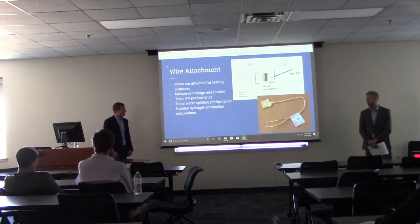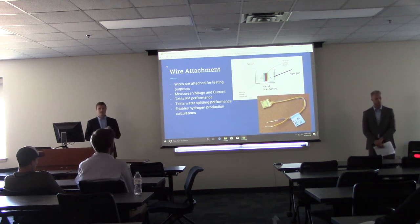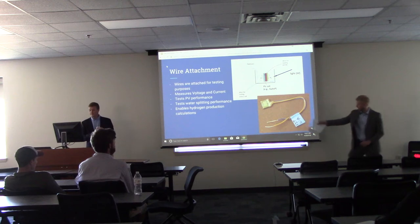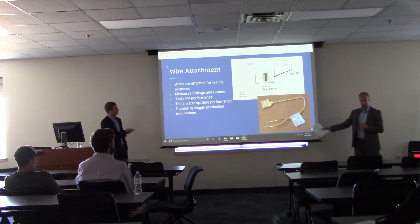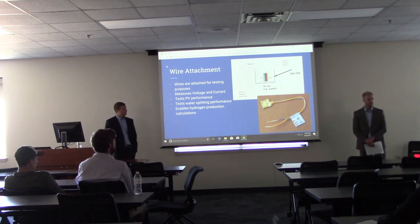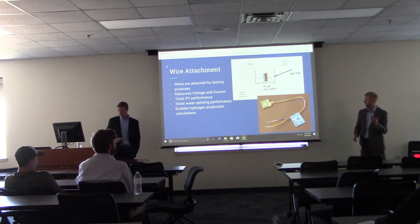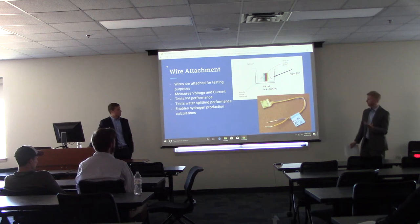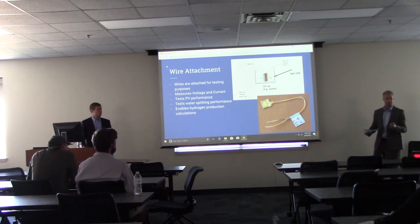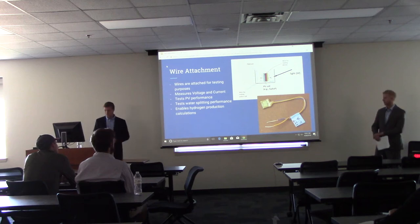Our last fabrication step was wire attachment. Wires were attached for testing purposes to measure voltage and current and test the performance of our PV cell and entire leaf. A blue wire on the back tested the whole leaf, and an orange wire on the front tested the bismuth vanadate, allowing us to accurately measure each portion. Testing both simultaneously gave the performance of our PV cell. The sample was submerged in a salt water solution and light was shined on it; voltage and current density allow us to do hydrogen production calculations.